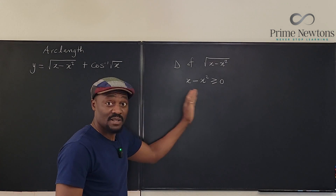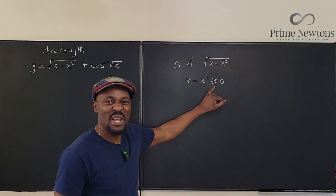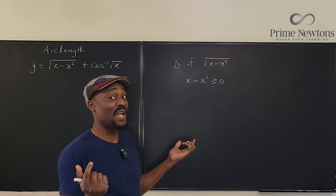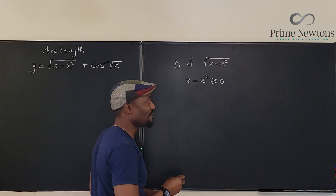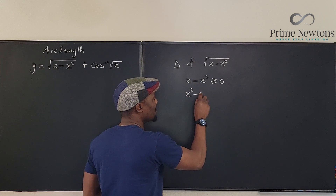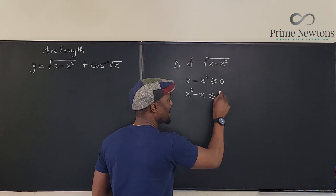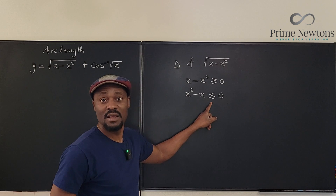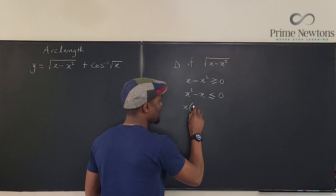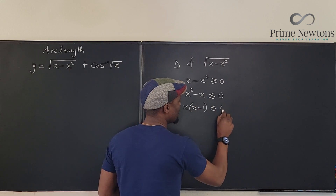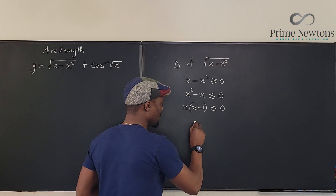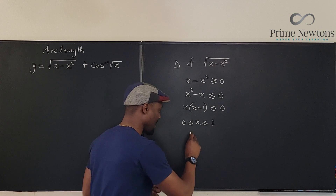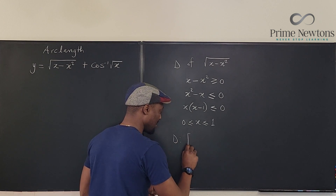Now, because we're using greater than, you can make your life easy: switch this to less than, so you don't have to draw a sign chart. Multiply both sides by negative 1 — this becomes x² minus x, and the sign changes, so it becomes less than or equal to 0. Now when I solve this, I factor: x times (x minus 1) ≤ 0. So x equals 0 or x equals 1, meaning x is between 0 and 1. The domain is from 0 to 1.